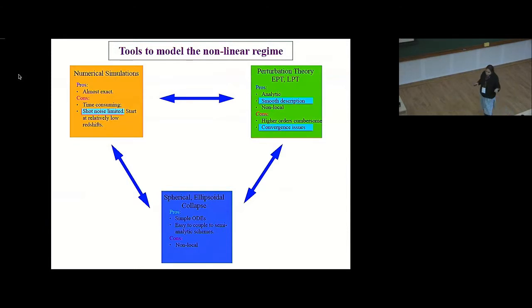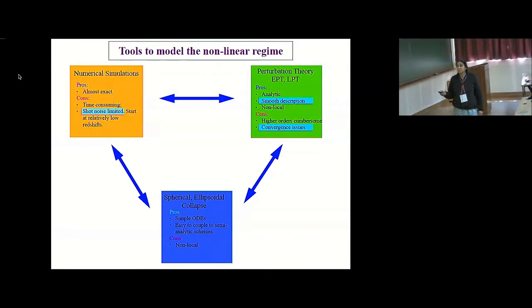There are three broad classes of tools. We've heard there's a whole lot of data coming in the next decade, and we need good, accurate theoretical models to match the data. So there are three broad classes of tools. One is numerical simulations—these are almost exact, but their two main drawbacks is that they are time consuming, and more importantly, they are shot noise limited. That is, they use a discrete representation for the density, and so for things like non-Gaussianity that was talked about earlier, these could pose limitations.